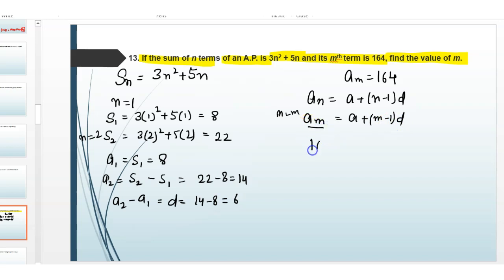Substitute the value: mth term is 164 is equal to first term is 8 plus m minus 1 and the common difference is 6.